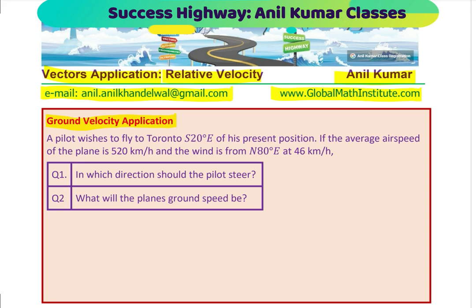A pilot wishes to fly to Toronto, south 20 degrees east of his present position. If the average air speed of the plane is 520 kilometers per hour and the wind is from north 80 degrees east at 46 kilometers per hour, in which direction should the pilot steer? What will the plane's ground velocity be?